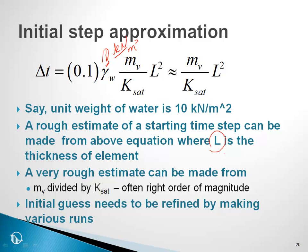Even more simply, a very rough estimate can be made from M sub V divided by K sat. This sometimes puts us in the right order of magnitude but is useful to make an initial guess.